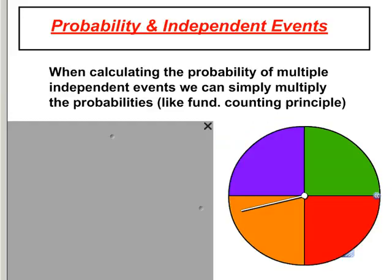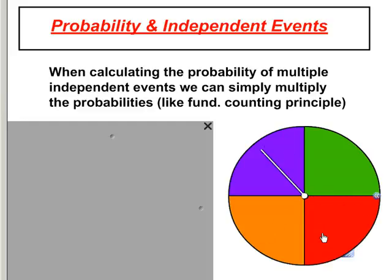Here are a couple of examples about probability and independent events. We're going to spin this spinner twice. Whatever happens the first time — we got purple — when I go to spin the second time, it doesn't matter what color I got the first time. It's an independent event; it's just a one-in-four chance I get any color again.